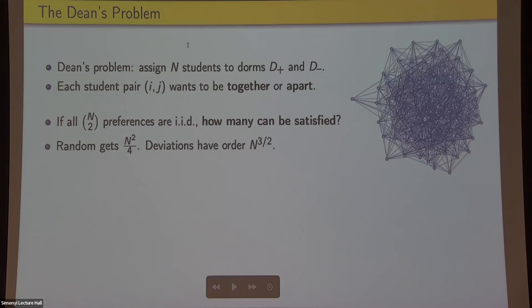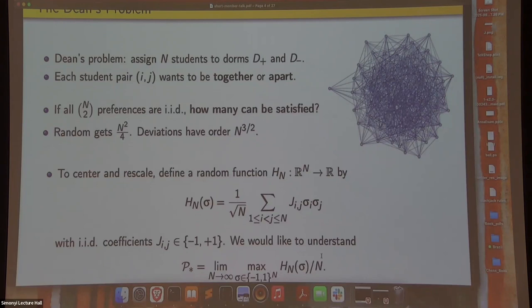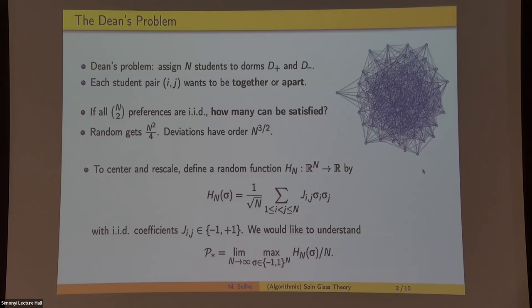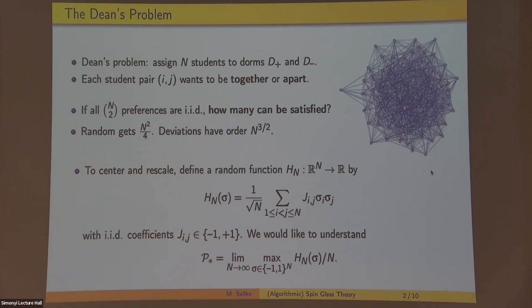So let me center and rescale a little bit. We're going to rescale so that we just have this random quadratic function h_n, and it's a quadratic function with iid plus minus coefficients. This problem is equivalent to just maximizing this quadratic function on the Boolean cube. Each student is assigned to plus or minus, so a solution is a length n vector of pluses and minuses, and these coefficients J_ij of my function tell me whether those students are friends or enemies. So what I'd like to do is understand the extreme values of this function.